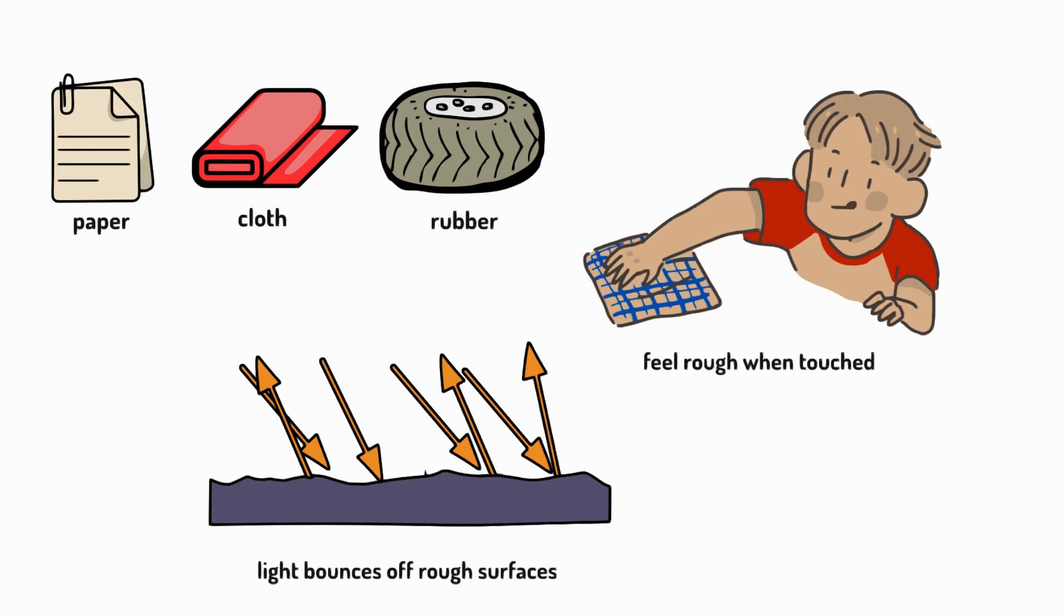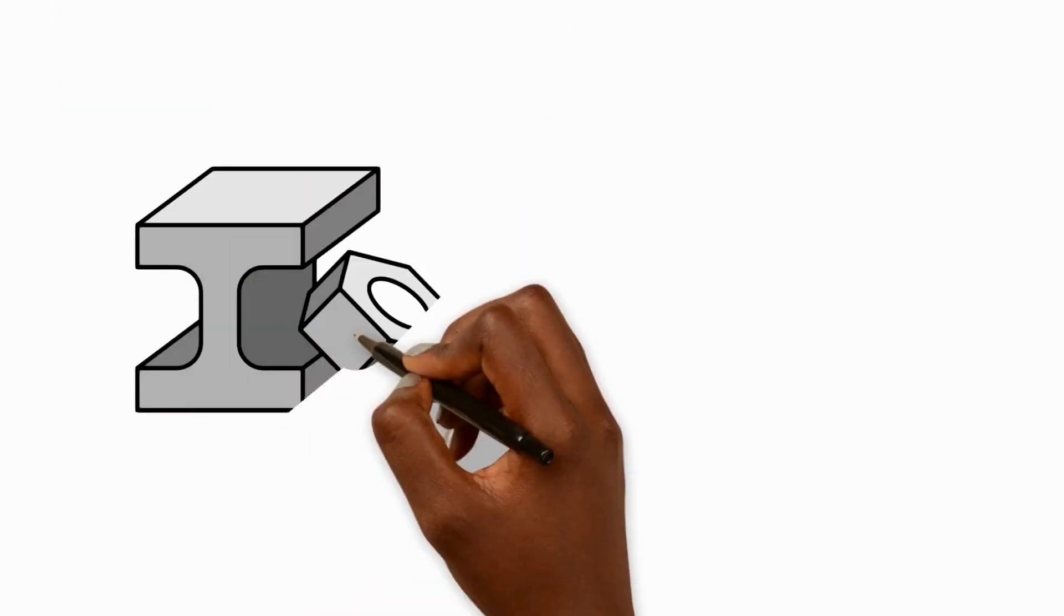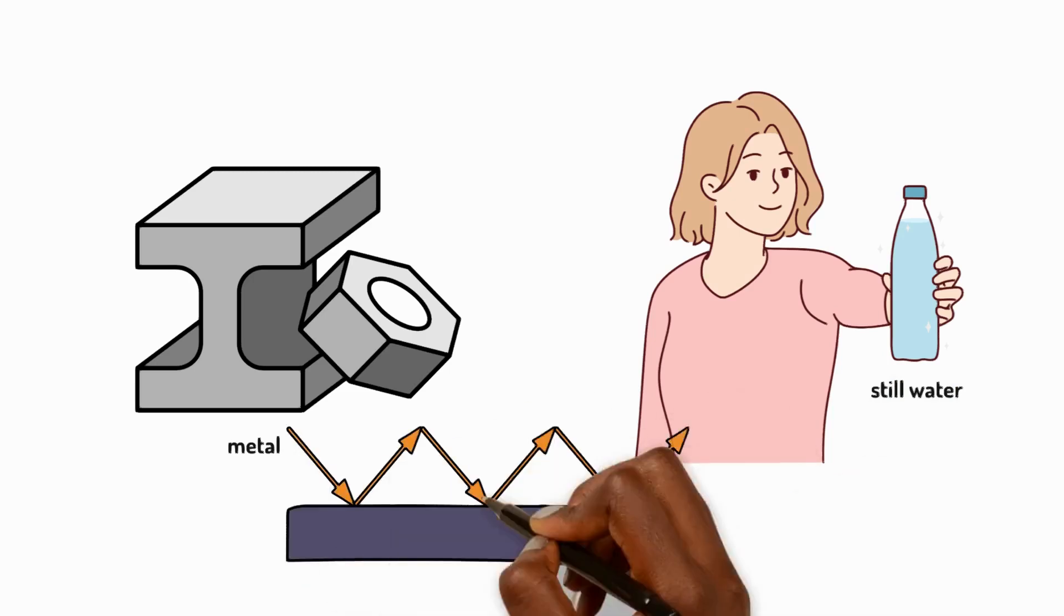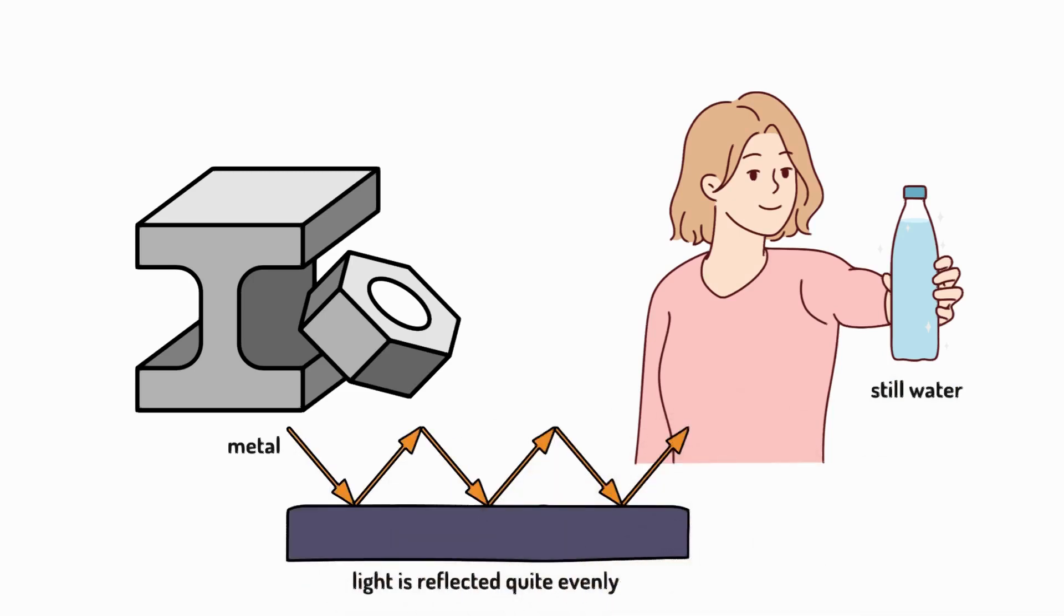Materials with smooth shiny surfaces reflect light well. For example, metals and still water. When light hits these objects, the light is reflected quite evenly.